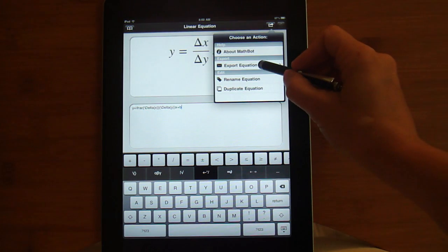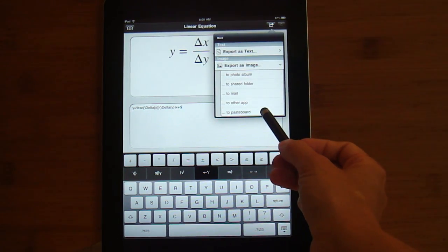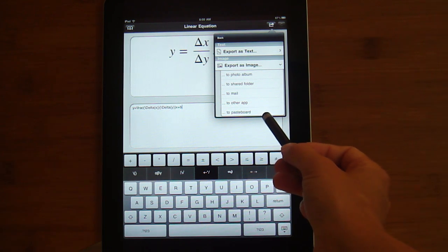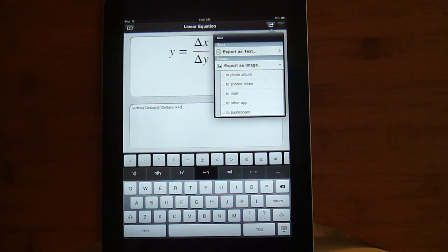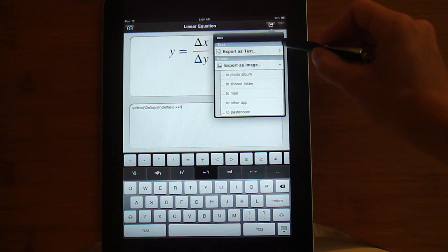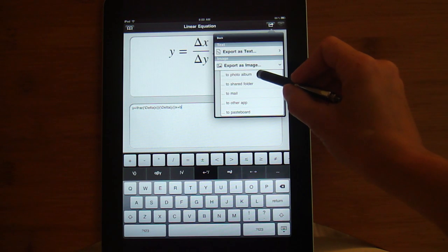In order for the equation to actually render, we're going to have to export it. You can either export it to the pasteboard. In that case, you would have to go directly to the app you're going to use it in and paste it somewhere. I'm wanting to do several equations.